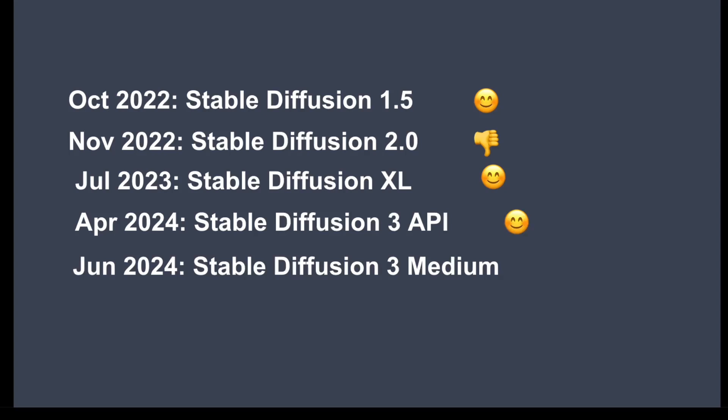It is a great model with a lot of improvements such as text generation and prompt following. Now, in June 2024, Stability AI has finally released the highly anticipated Stable Diffusion 3 model, but only the medium version. Is it a success or a flop? Let's find out.